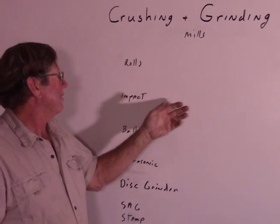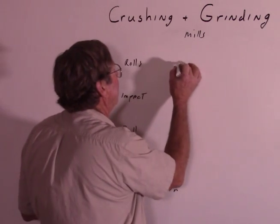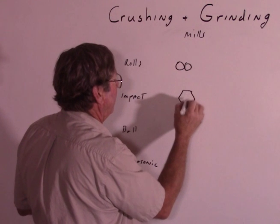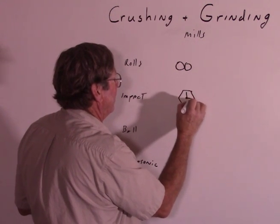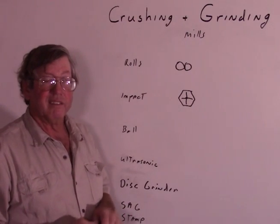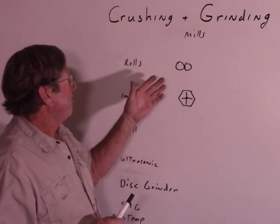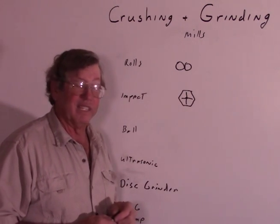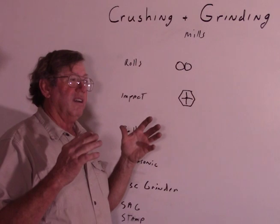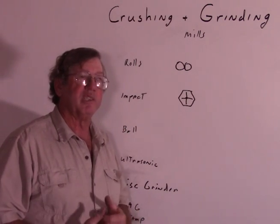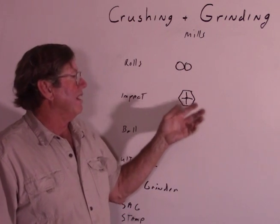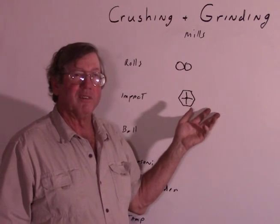Probably the most common mill for the micro scale miner is an impact mill. An impact mill has some kind of a very sturdy steel housing and then some kind of a rotor that spins around at high speed. You feed the ore in and it gets beat very violently. An impact mill has certain advantages and certain disadvantages. Number one, it's a very violent reaction — harder materials are much less damaged by an impact than softer materials. So this will tend to grind your minerals differently.